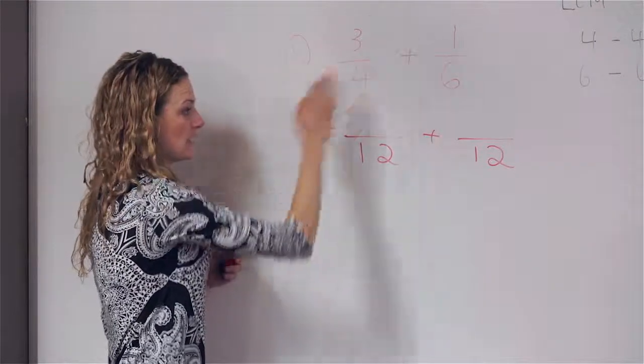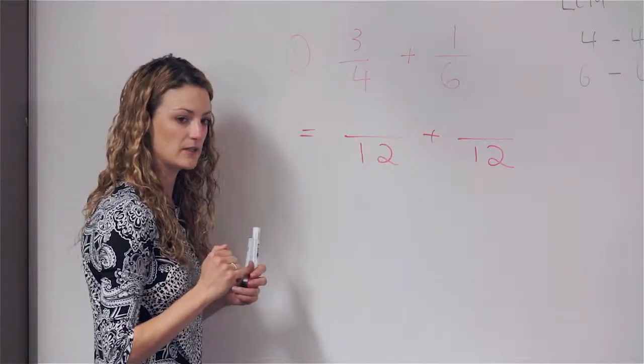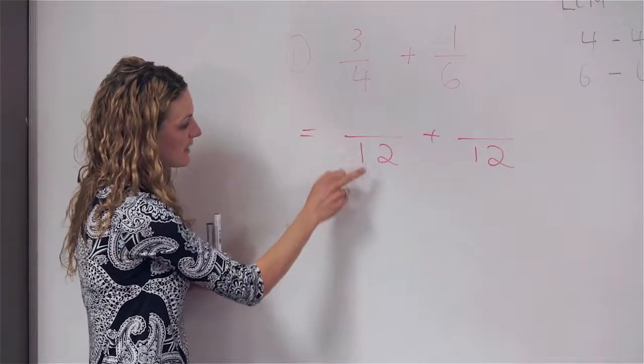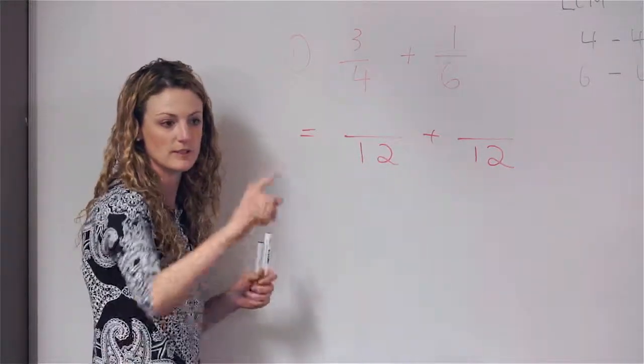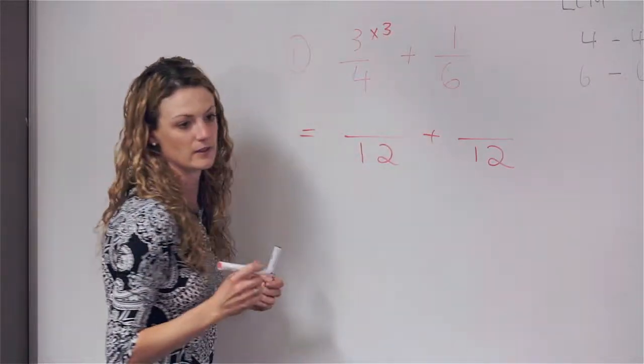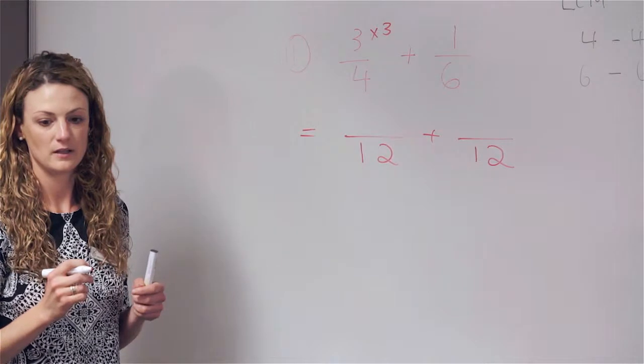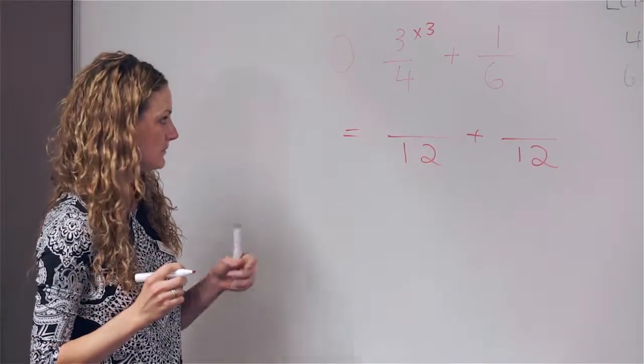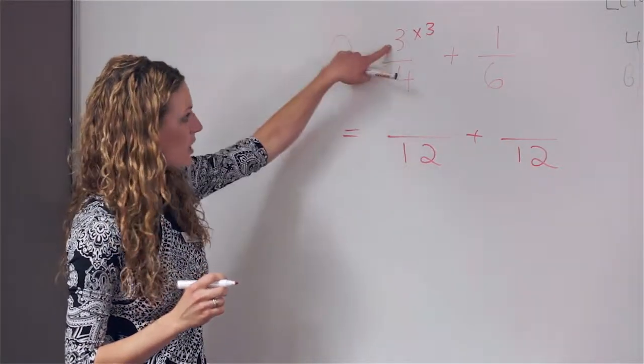So what we need to do here is we need to see what is happening with the denominator so we can have this line that's equal to this line. So what has happened? What have we done to get from four to twelve? Yes, Eliza. Times by three. Now this is important to put in as you're working.